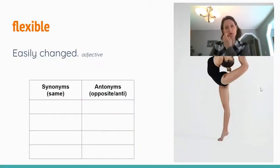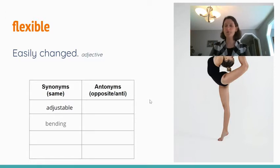First let's look at flexible which means easily changed. Some synonyms for flexible might be adjustable or bending. Things that can adjust and bend are flexible.